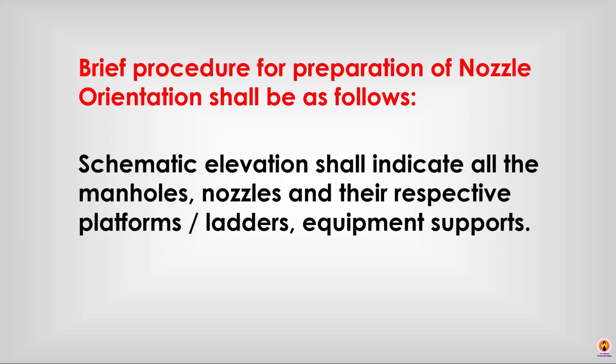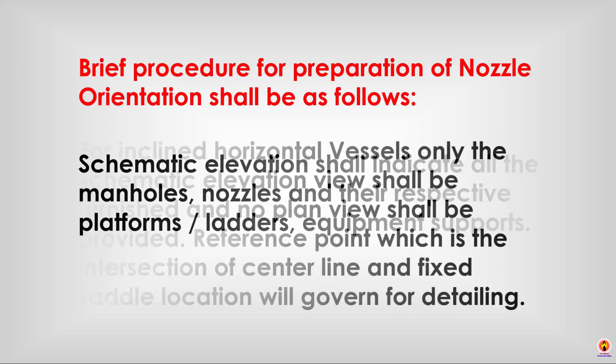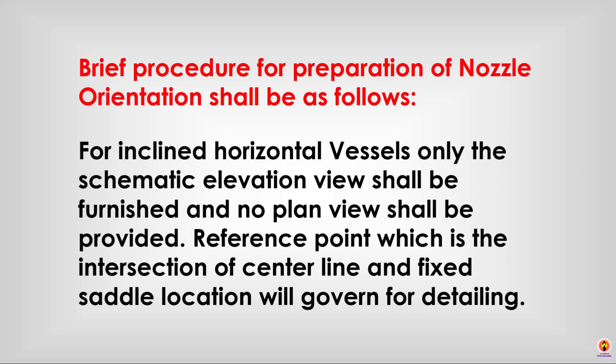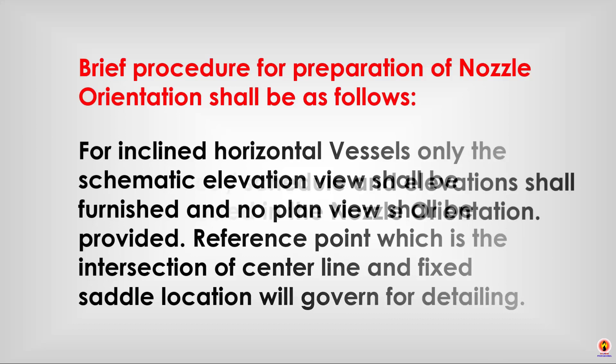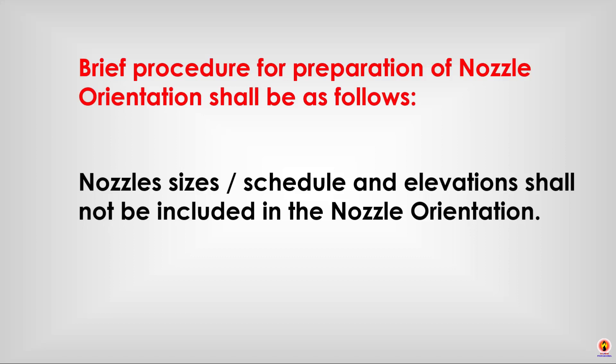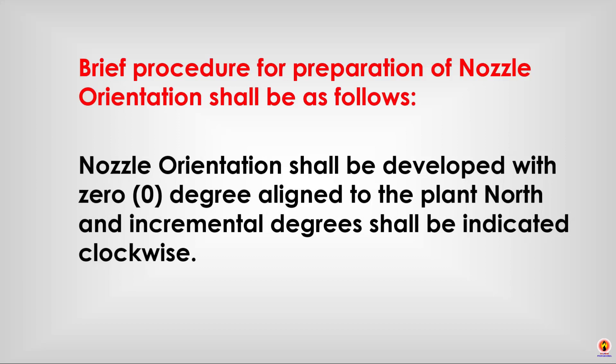Schematic elevation shall indicate all manholes, nozzles and their respective platforms, ladders, and equipment supports. For inclined horizontal vessels, only the schematic elevation view shall be furnished and no plan views shall be provided. A reference point, which is the intersection of the centerline and fixed saddle location, will govern for detailing. Nozzle sizes, schedule, and elevation shall not be included in the nozzle orientation. Nozzle orientation shall be developed with zero degrees aligned to the plan north, and incremental degrees shall be indicated clockwise.